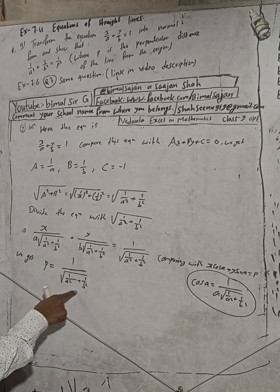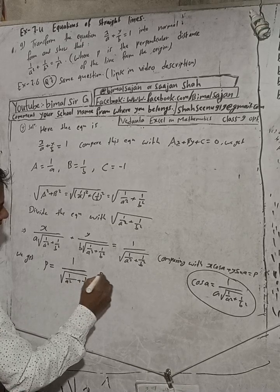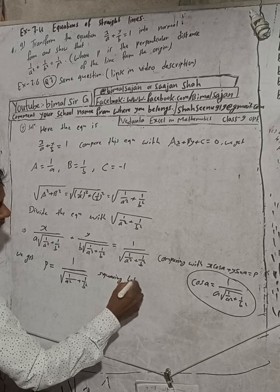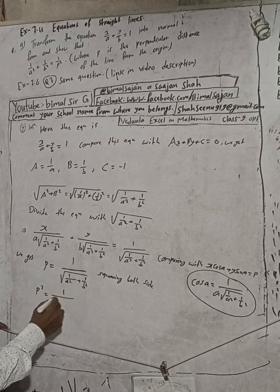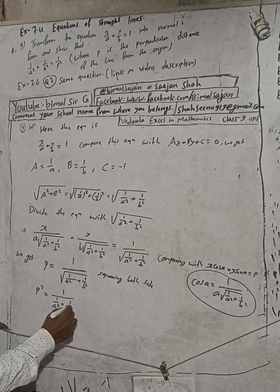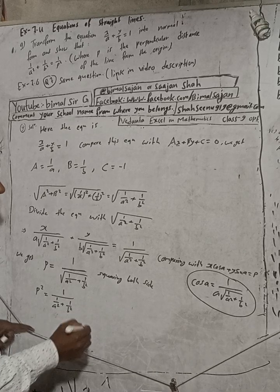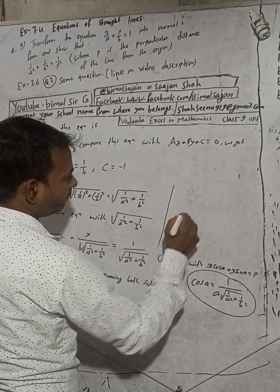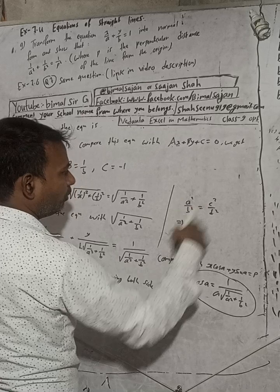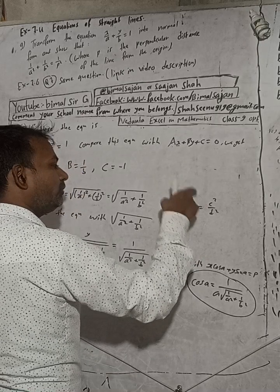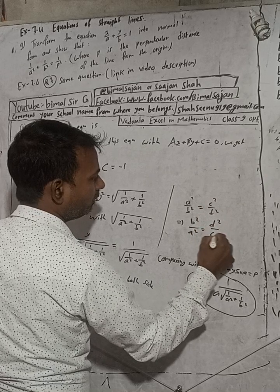Now squaring both sides: p² = 1² / (1/a² + 1/b²), which gives p² = 1 / (1/a² + 1/b²). Now when we reciprocate — just as a/b² = c/d² implies b²/a = d²/c — reversing numerator and denominator gives us the next step.